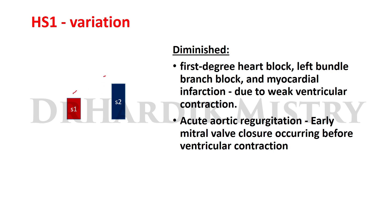Diminished first heart sound means S1 is softer than S2. This occurs in first-degree heart block, left bundle branch block, and myocardial infarction — due to weak ventricular contractions. It is also diminished in acute aortic regurgitation because of early mitral valve closure that occurs before ventricular contraction. So in all these conditions S1 is diminished.